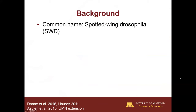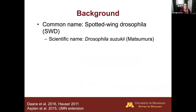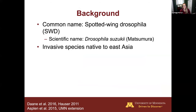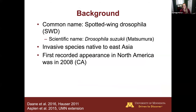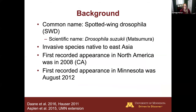Quick background. The common name is Spotted Wing Drosophila, but for the remainder of the presentation I'm going to refer to it as SWD. The scientific name is Drosophila suzukii. It's an invasive species native to East Asia, first reported in North America in 2008 in California, and then in Minnesota in August of 2012.